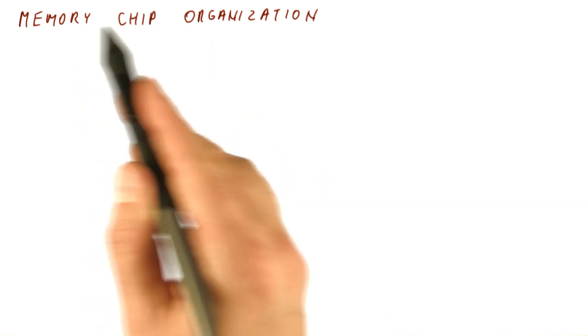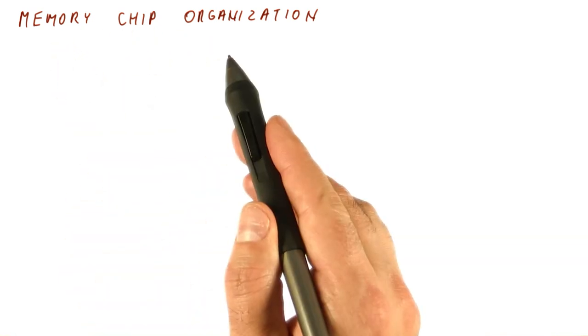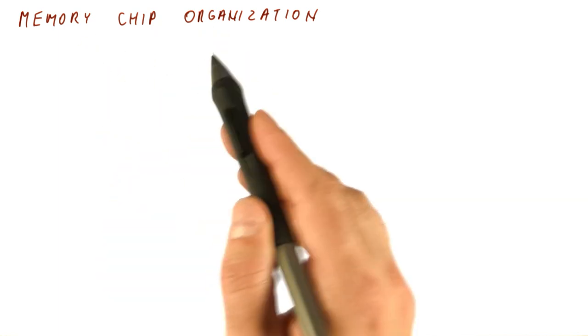So we have seen what a single bit in memory looks like. Now let's see how the whole chip is organized.